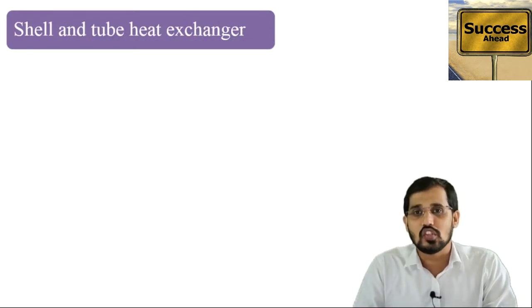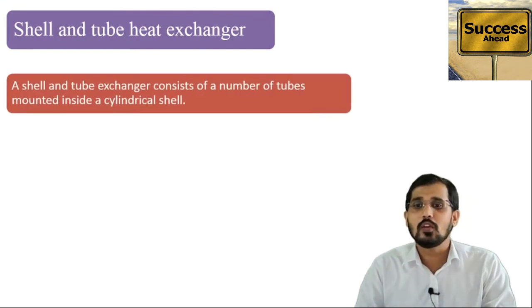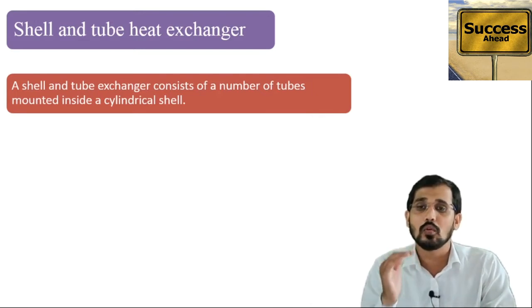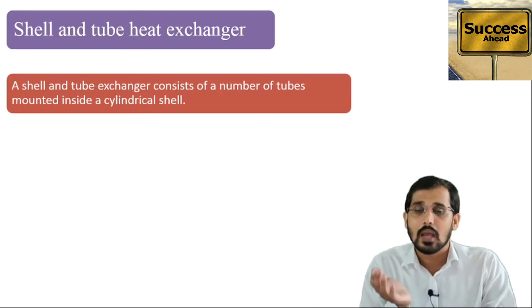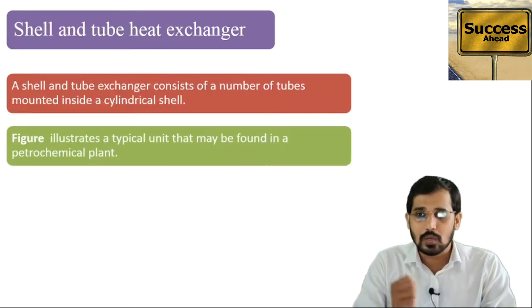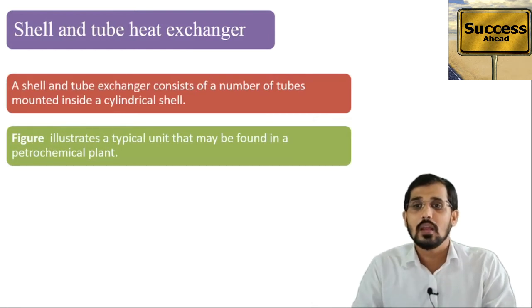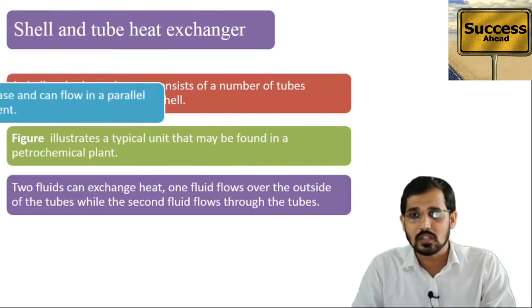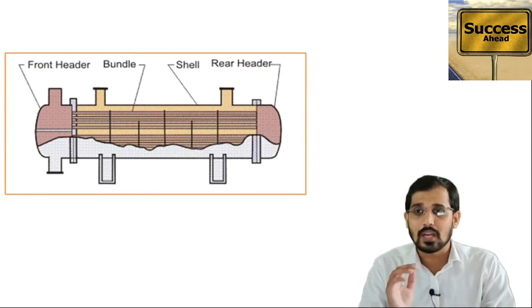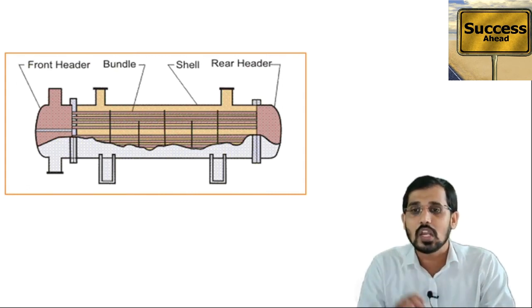Next, you can see on the screen the shell and tube heat exchanger. A shell and tube heat exchanger consists of a number of tubes — those are tube bundles — mounted in one shell. The figure illustrates a typical unit of the shell and tube heat exchanger as found in petrochemical units. I will explain the important parameters: front header, bundle, shell, and rear header in the next slide.